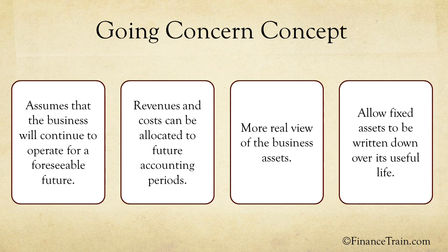Assume that you have purchased machinery for your business for $10,000. If your machinery is expected to have a useful life of five years, then the accountant would write off or depreciate only one year's value — that is $2,000 this year — leaving $8,000, which will be treated as a fixed asset with future economic value for the business. If the going concern concept was not there, the whole machinery would have to be written off in the same year. Our accounting standards are based on the assumption that the business will continue for a long period of time and the transactions are recorded accordingly.